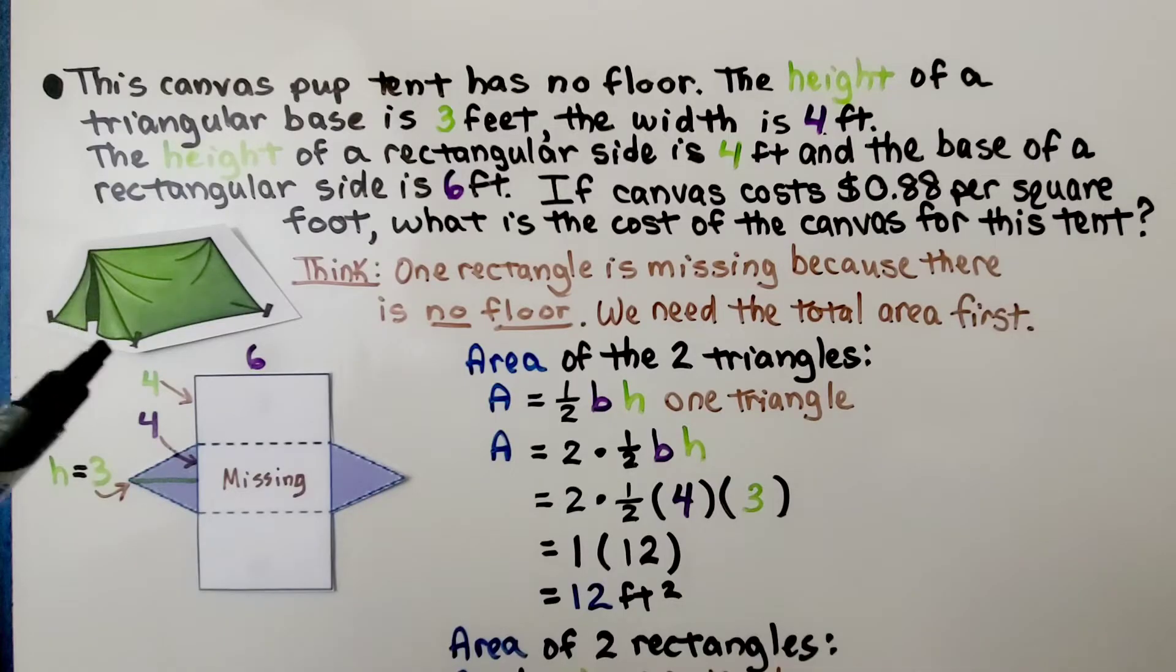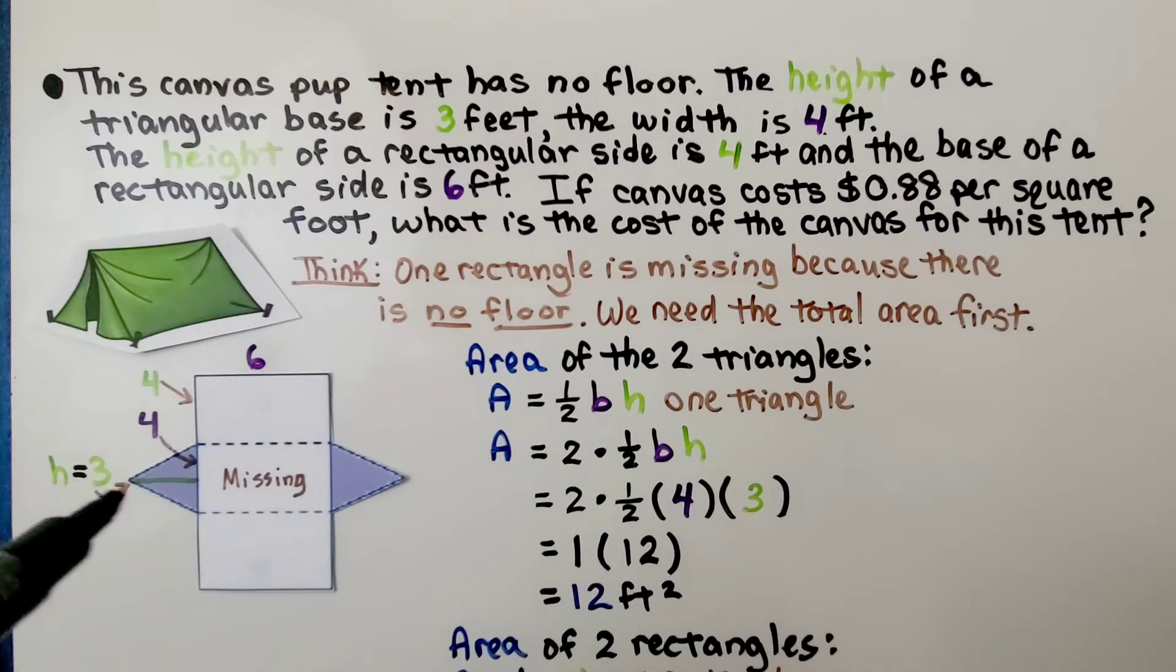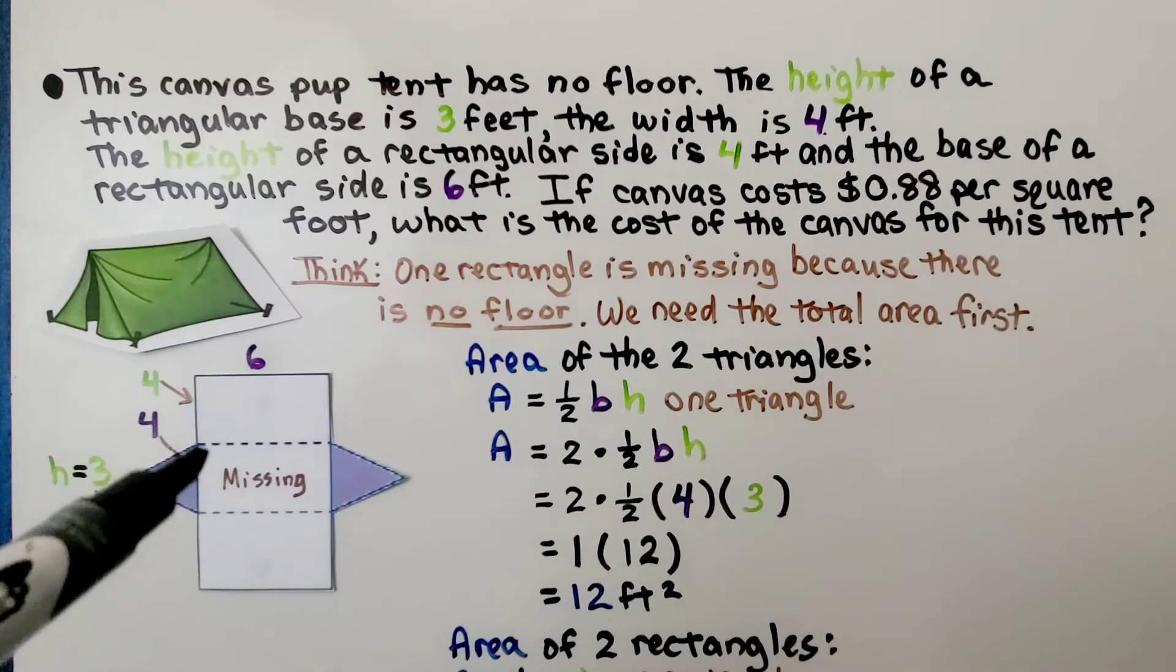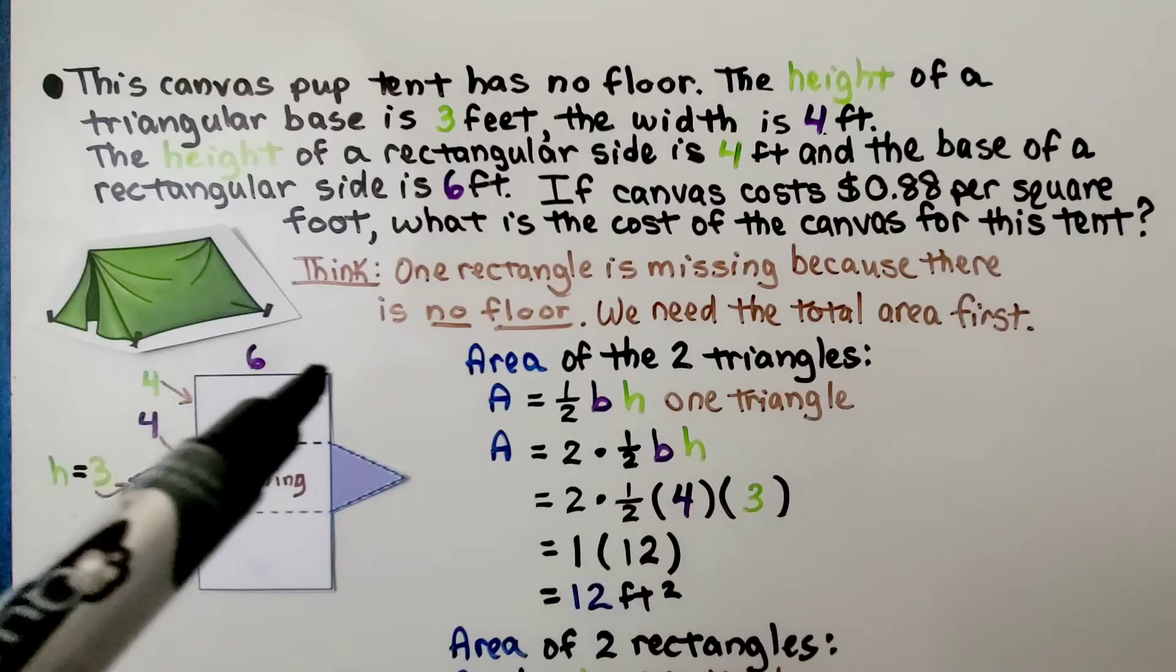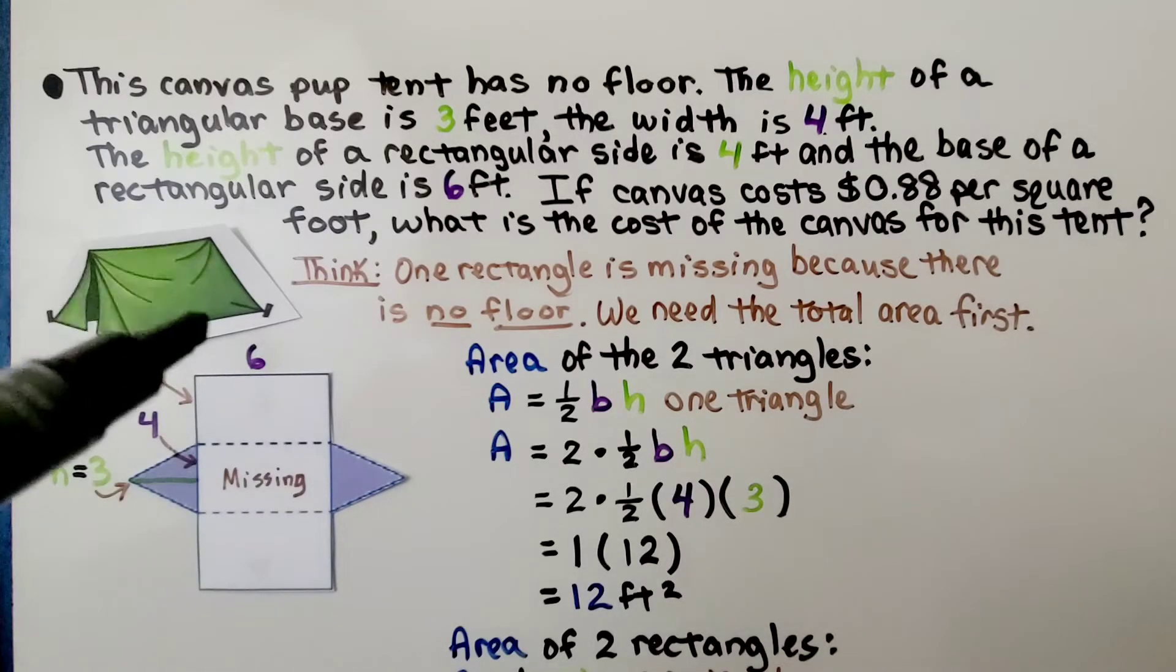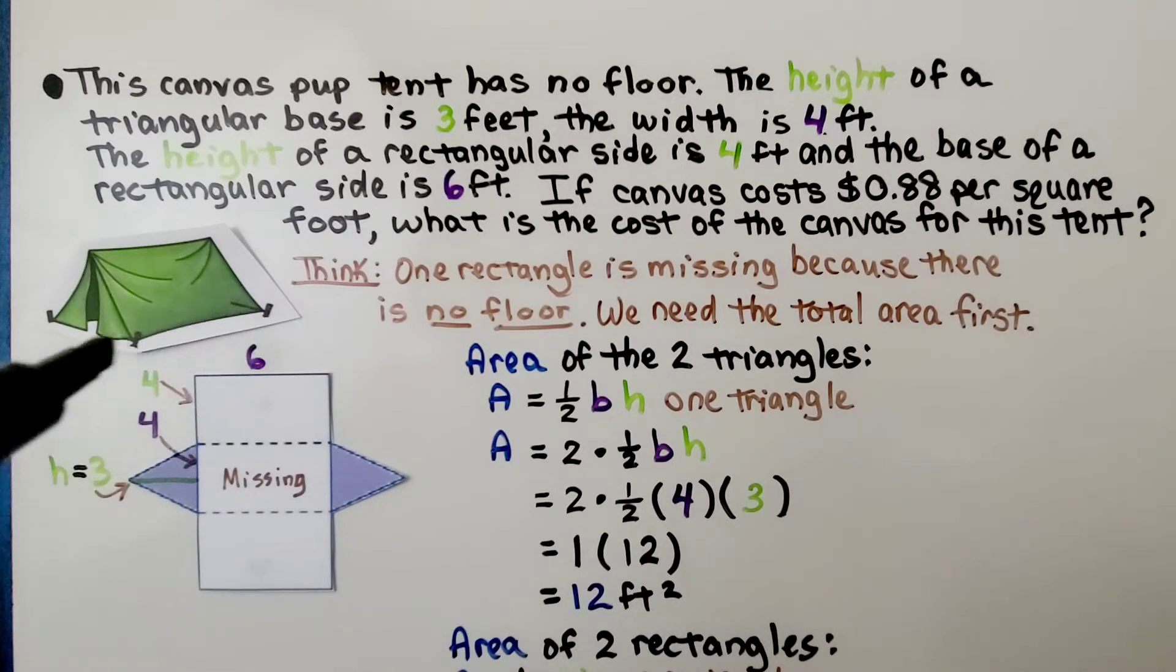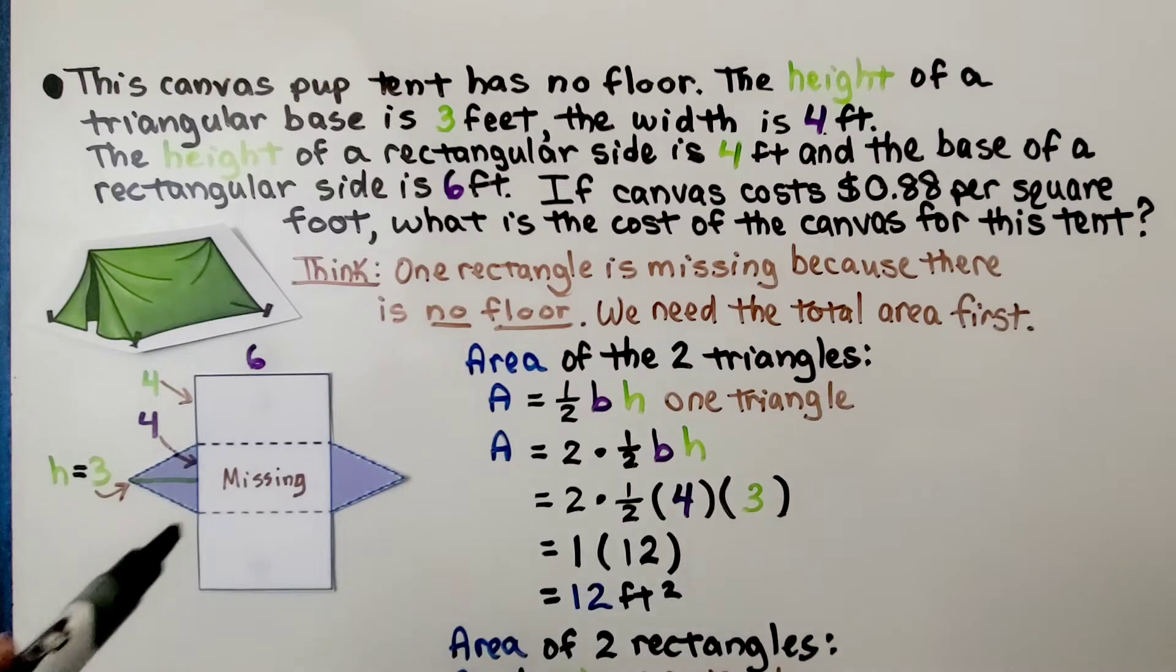Take a look at this tent. This is a pup tent. It has no floor. The height of a triangular base is 3 feet, so that would be this right here, and the width is 4 feet, so this is 4 feet. The height of a rectangular side is 4 feet, and the base side is 6 feet. So that means this is 4 feet, and this is 6 feet on the tent. If canvas costs 88 cents per square foot, what is the cost of the canvas for this tent? One rectangle is missing because there's no floor, so we need to find total area first.